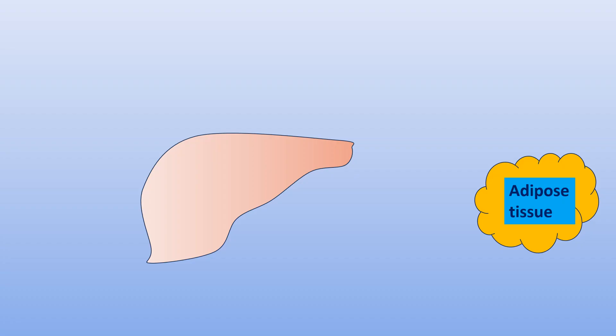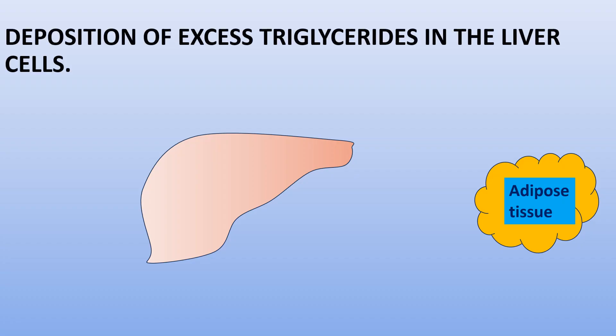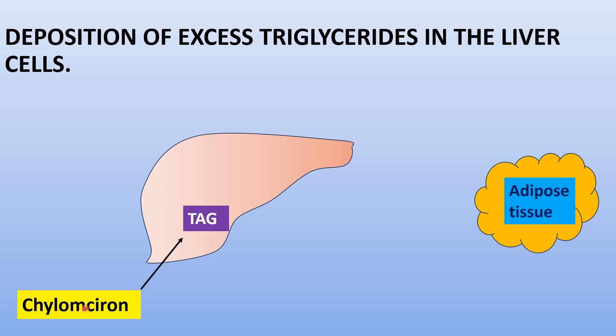Fatty liver. When the deposition of excess triglyceride in the liver cells occurs, it causes fatty liver. In normal conditions, chylomicrons are formed after lipid absorption. These have more triacylglycerol and transport the triglycerol to the liver.